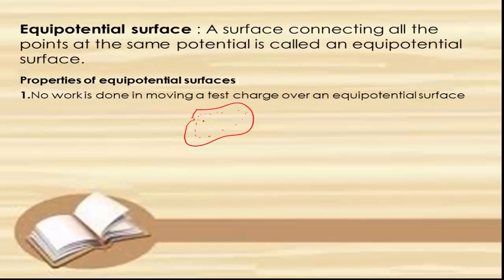The surface may be a surface of a body or a surface in space. For example, the surface of a charged conductor is an equipotential surface. If you consider a charged conductor, the surface of this charged conductor is an equipotential surface.